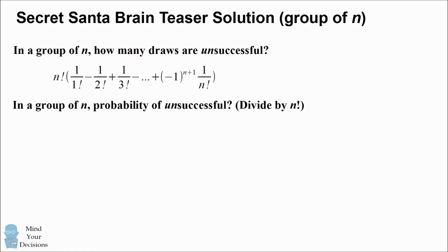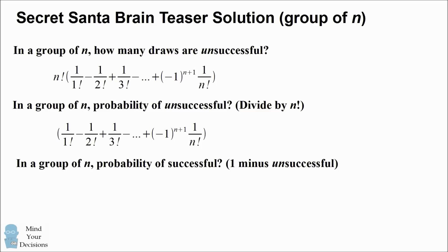We can find the probability of an unsuccessful draw by dividing by the total number of ways, which is n factorial. So that'll remove the n factorial term, and we have the alternating sum of factorials equal to the probability that we have an unsuccessful draw. Now to get a successful draw, we take 1 minus the probability of an unsuccessful draw. So that removes the first term, and we have the alternating sum of the reciprocals of factorials starting at 1 over 2 factorial.